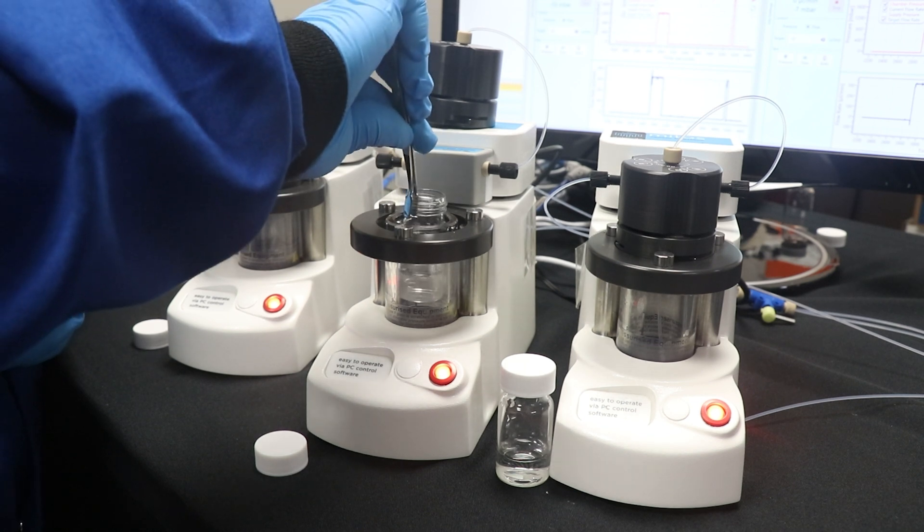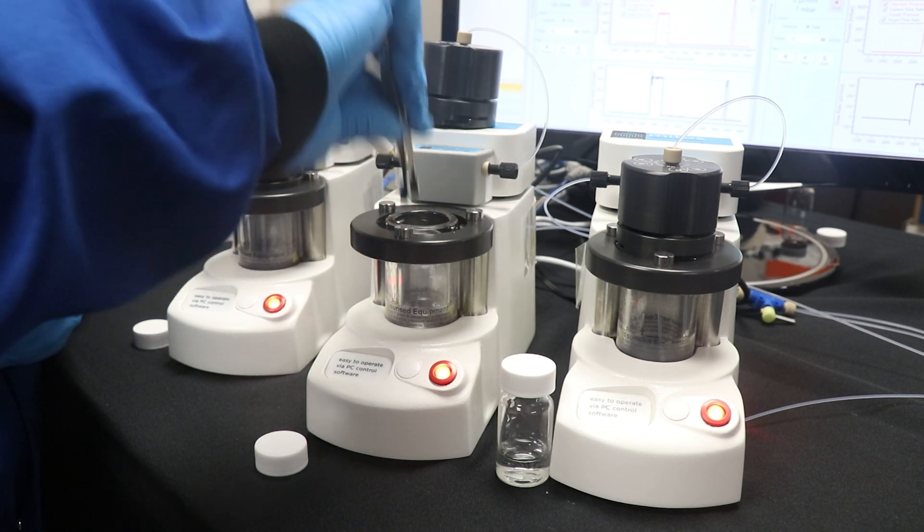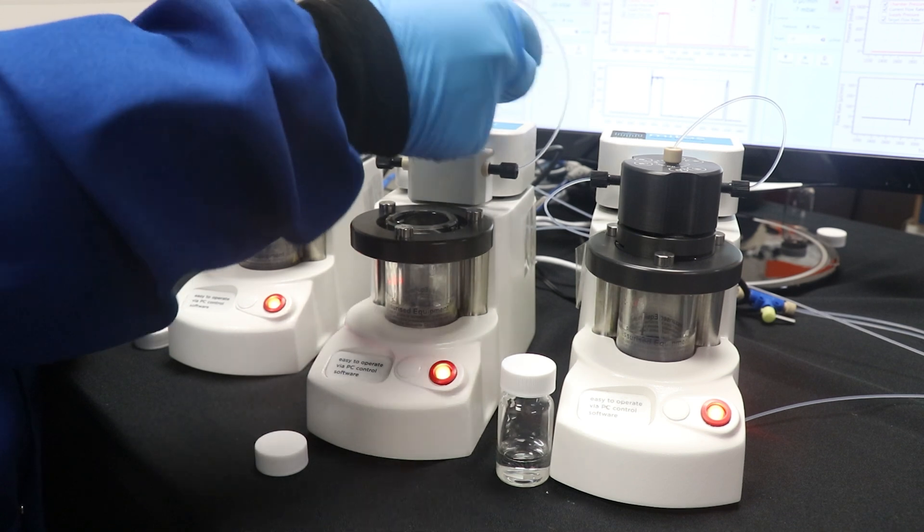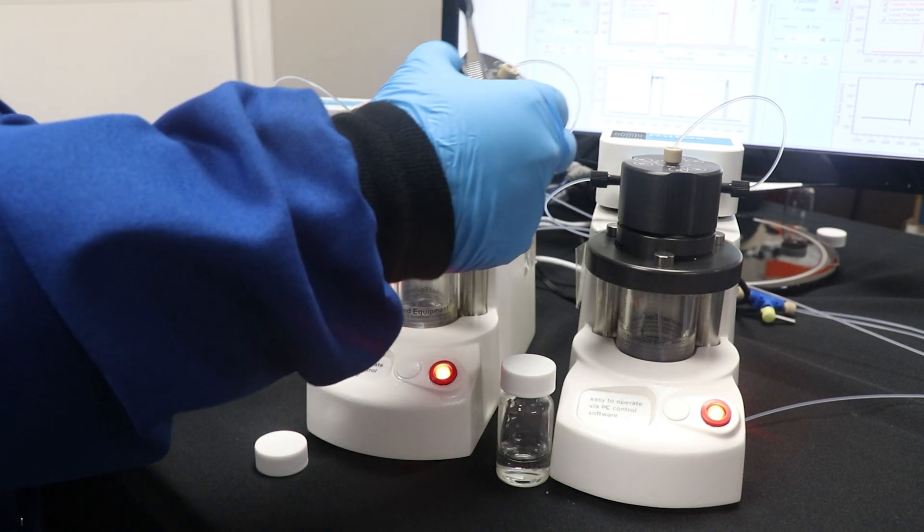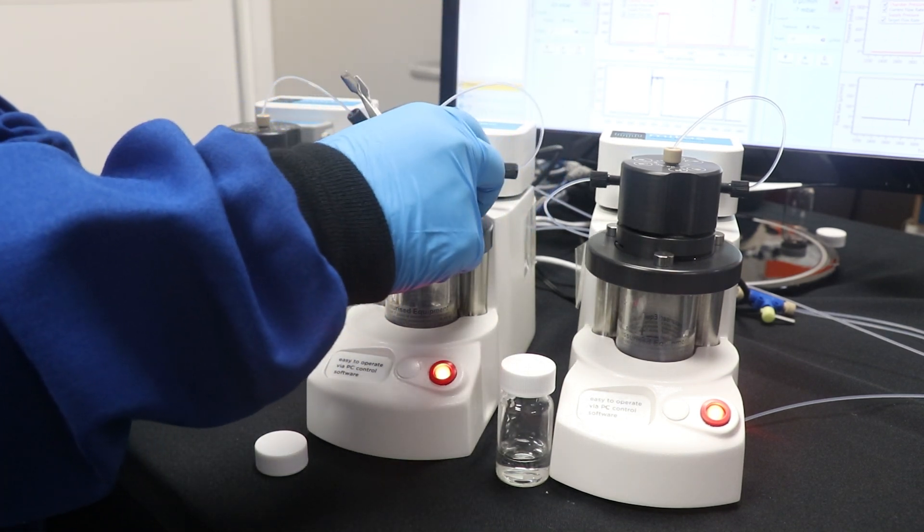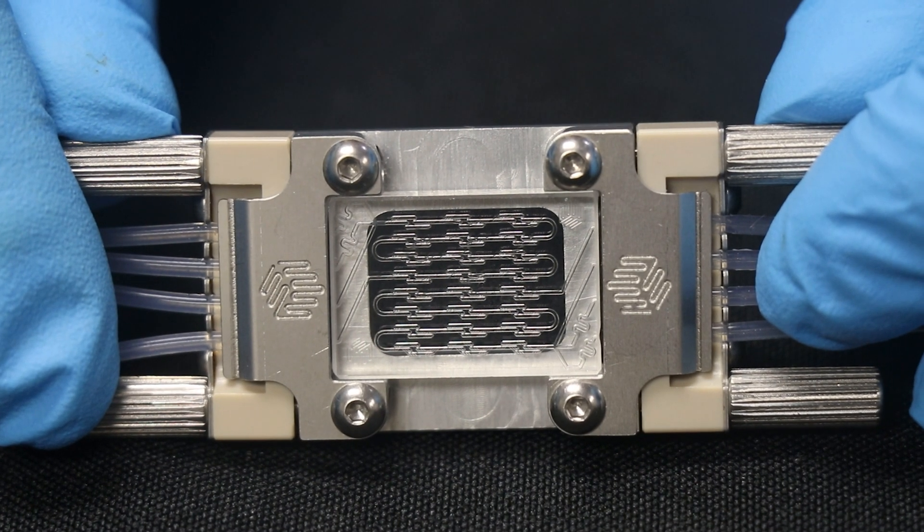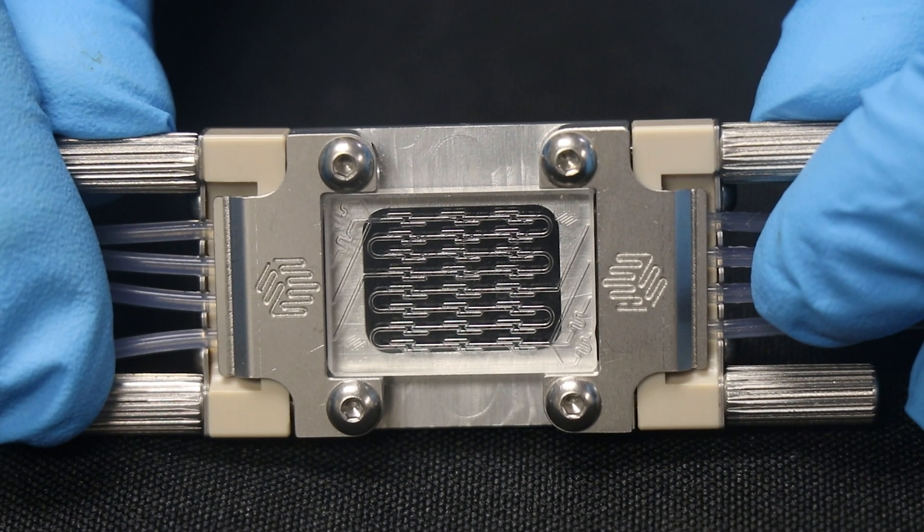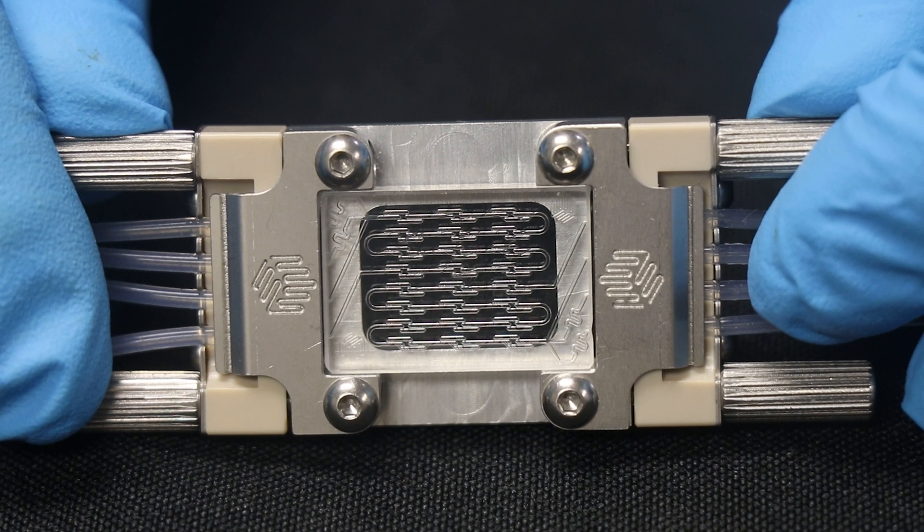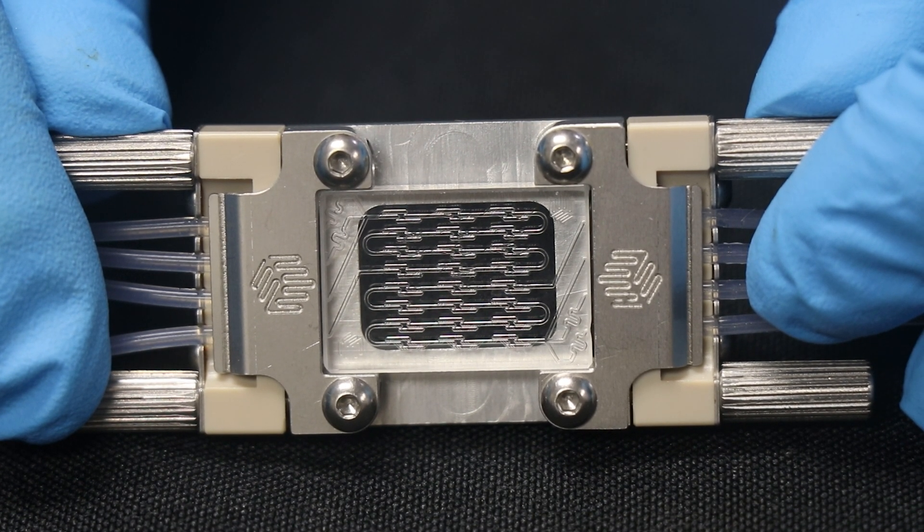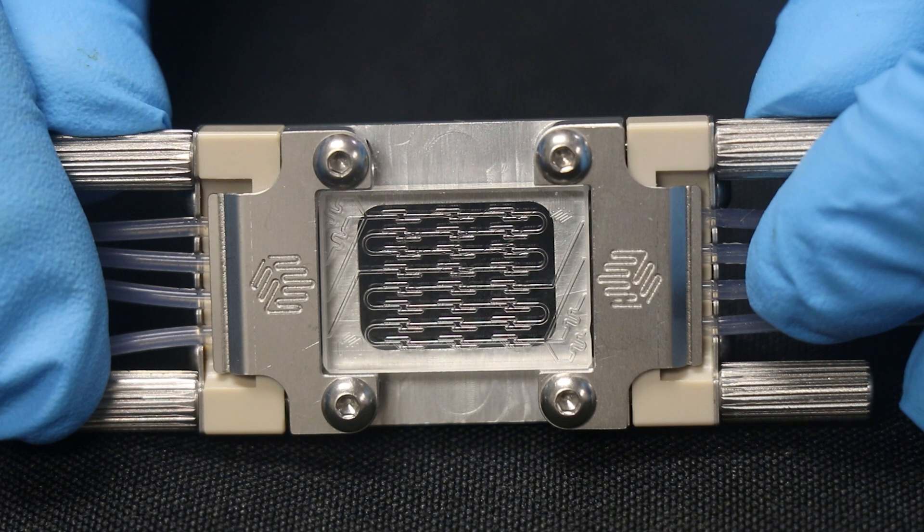Prior to initiating flow through the chip, we will tare all of our flow sensors and prime the lines. Then we will start by initiating flow on the aqueous phase, which enters the chip at the first and third inlets. Then the organic phase is initiated and enters on the second inlet of the chip.